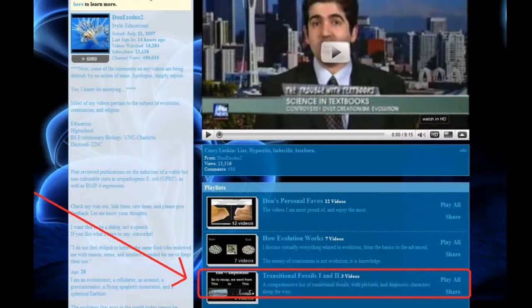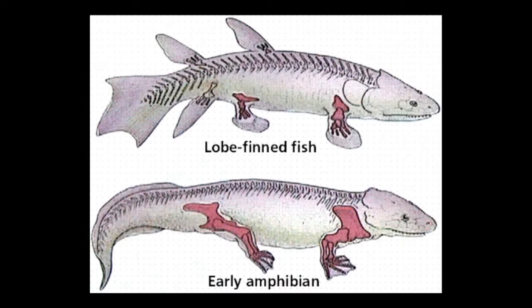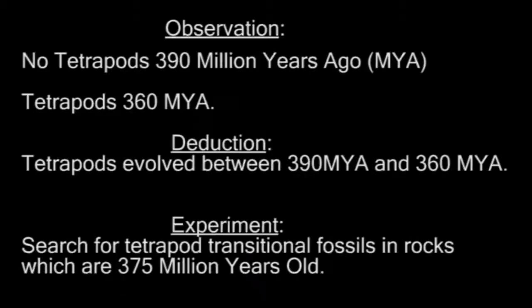This next example will demonstrate the amazing predictive power of evolution. We know from comparative anatomy, embryology, genetics, and the fossil record that tetrapods — creatures with four legs — arose from lobe-finned fishes. From the fossils, we find there are no tetrapod vertebrates 390 million years ago, but they are clearly there 360 million years ago. So we can predict we will find the transition from lobe-finned fishes to tetrapods somewhere in that 30 million year gap. Armed with this information, Neil Shubin and his colleagues looked at maps of exposed freshwater sediments from about 375 million years ago, formed an expedition, and after five years of searching, found the needed transitional fossil: Tiktaalik.